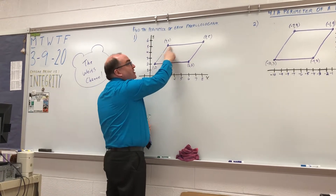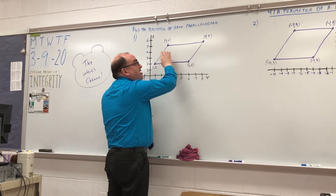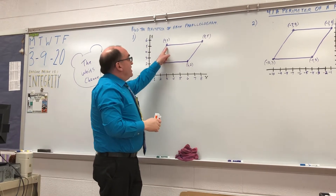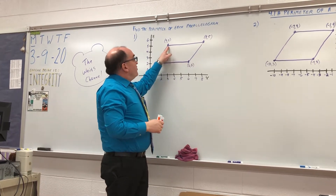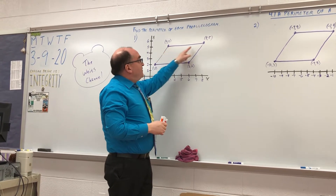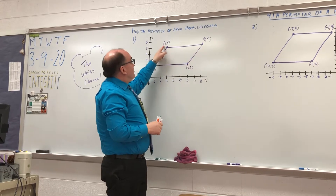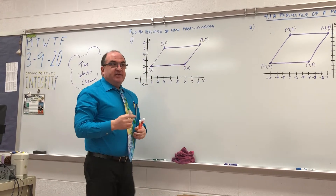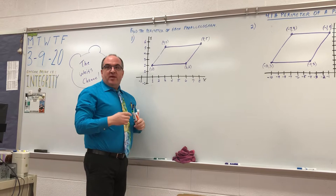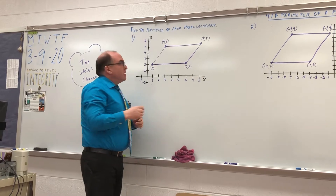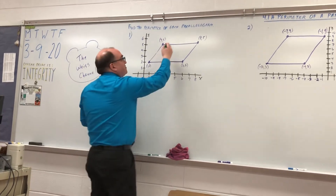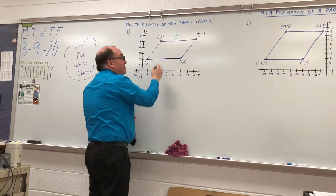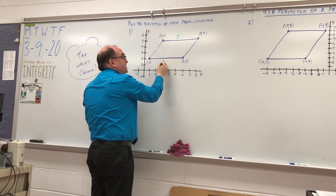Just like we found the perimeter of a rectangle, this is easy right here. From (3, 5) to (8, 5), what's the distance from 3 to 8? From 3 to 8 is a distance of 5, right? And if this side is 5, this side is also 5.